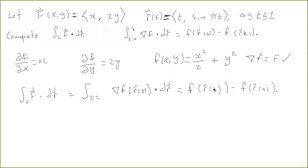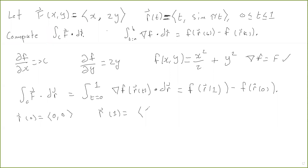So this is f of r(1) minus f of r(0). What is r(0)? You just plug in t equals 0: the first component is 0 and the second component is sine of 0, so that's also 0. So r(0) equals (0, 0). For r(1): the first component is 1, and the second component is sine of pi, so that's 0. So r(1) equals (1, 0).